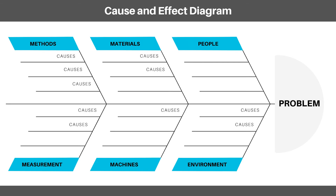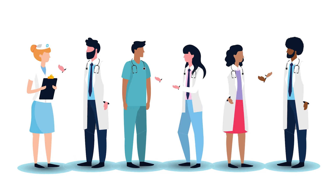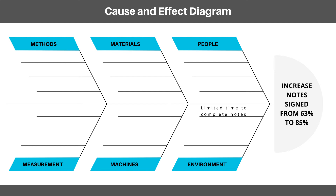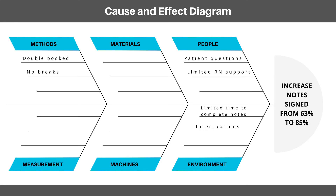Let's go back to the oncology example from the beginning of this video. The physicians were the main stakeholders in closing encounters, so I started by asking them what was getting in their way. The immediate answer was, 'we have limited time to complete our notes.' After some debate, we decided to include that in environment, and during the debate we discovered some of the whys that were in other categories. In methods, they double booked and have no built-in breaks in their schedules. In environment, they have many interruptions. In people, they have many regular patient questions to answer and limited RN support. As a team, we did not come up with any reasons within the materials or machines categories. These categories are meant to help brainstorm and make sure you don't miss something important, so it's okay that we don't have something in each one.